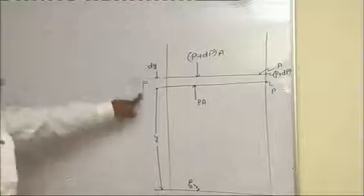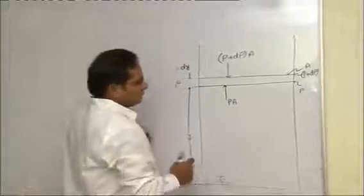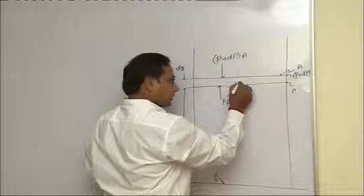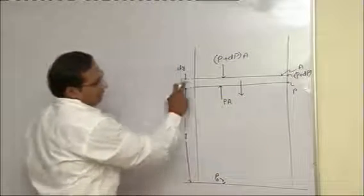Here density rho is. So we can write here the mass. How can you write? Rho A dy.